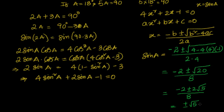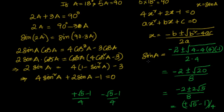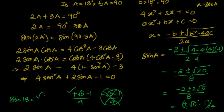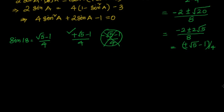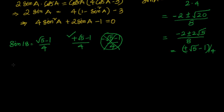This simplifies to: plus or minus root 5 minus 1 by 4. There are two values — one is (root 5 minus 1) by 4, and another is minus (root 5 minus 1) by 4. Since we are looking at 18 degrees which is acute and sine is positive in the first quadrant, the value of sin 18 is equal to (root 5 minus 1) by 4.